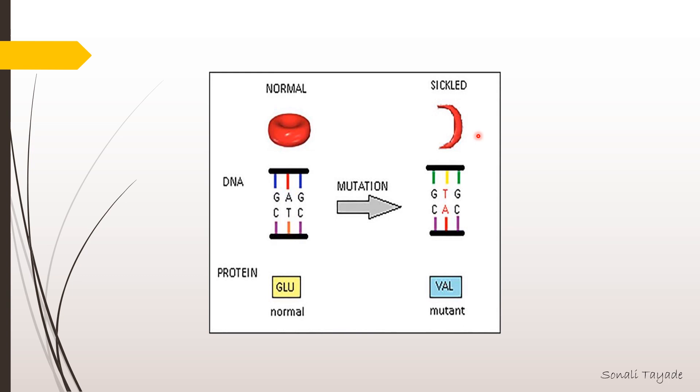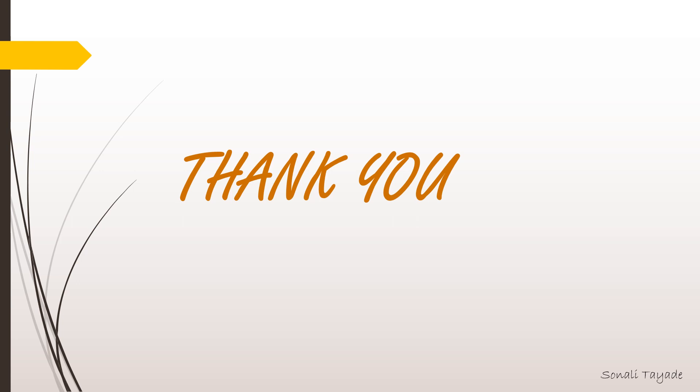These sickle cells are destroyed in the spleen within 10 to 20 days, which causes anemia. This is all about sickle cell anemia. Thank you for watching.